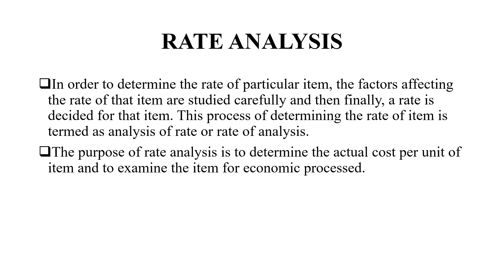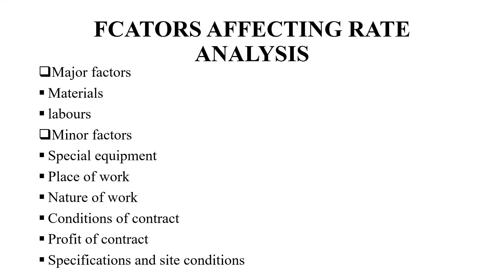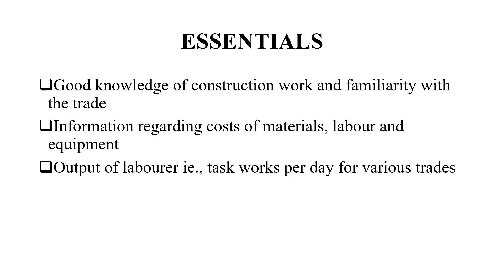The main purpose of analysis of rate is to determine the actual cost per unit of an item and to examine the economic process. The factors affecting rate analysis are classified as major factors and minor factors. Major factors include materials and labor, while minor factors include special equipment, place of work, nature of work, conditions of contract, profit of contractor, specifications, and site conditions.